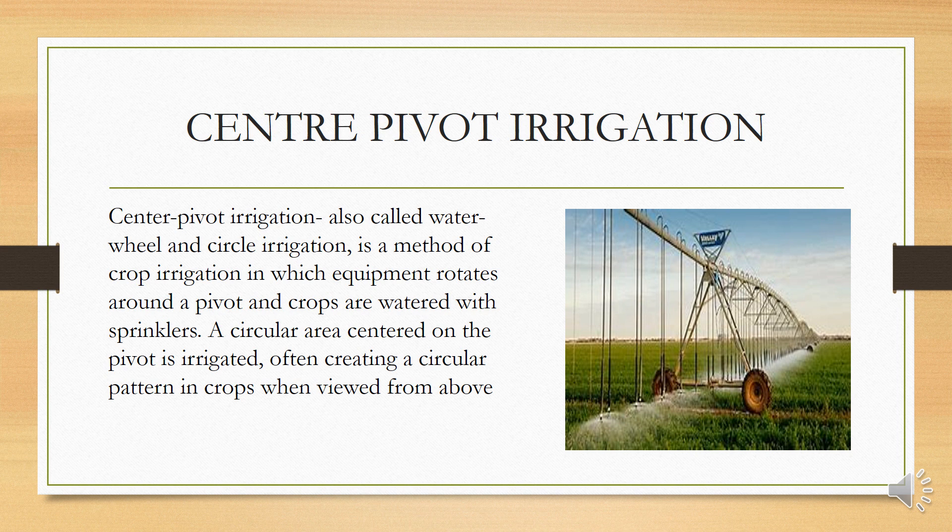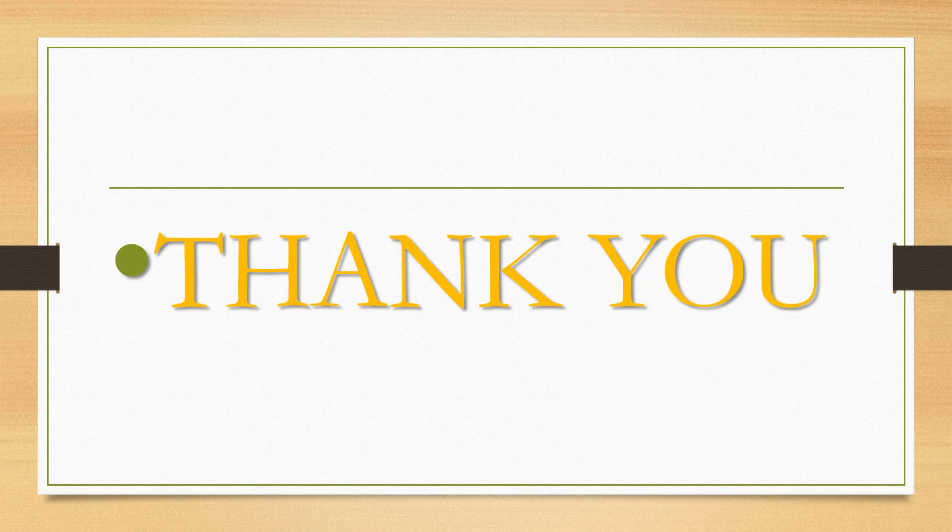Center pivot irrigation is used where rainfall is reduced and we need to cover a large area — much larger than what can be covered by surface irrigation, sprinklers, or drip irrigation. So we use center pivot irrigation to cover the maximum area.